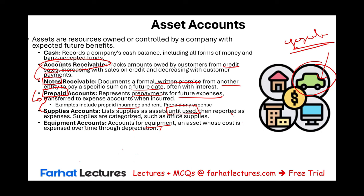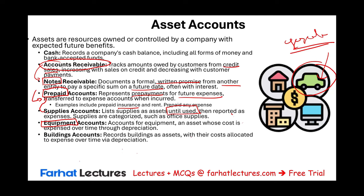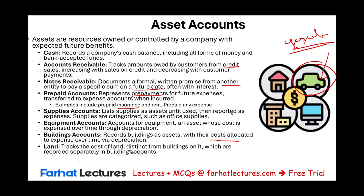Equipment accounts keep track of long-term assets such as computers and furniture — assets whose cost is expensed over time through depreciation. Buildings and warehouses are also recorded in their own account, and their cost is allocated through depreciation as well. Land is recorded as a separate account from buildings, tracking the cost of land. These are the common asset accounts you need to be familiar with in financial accounting.